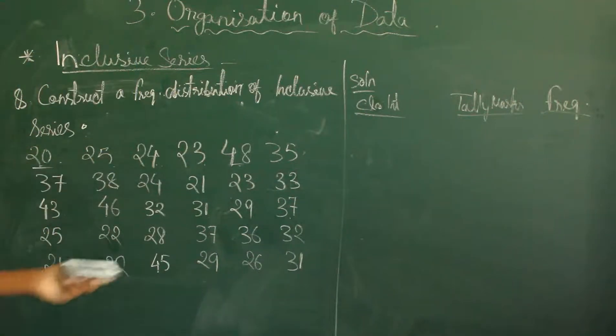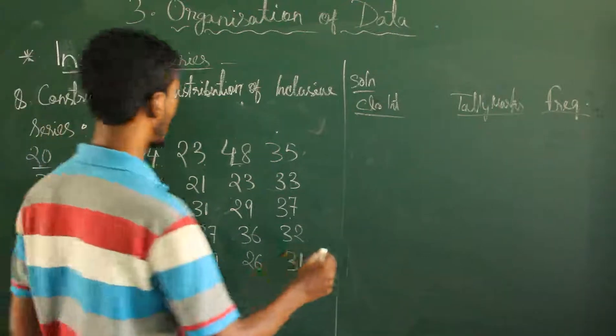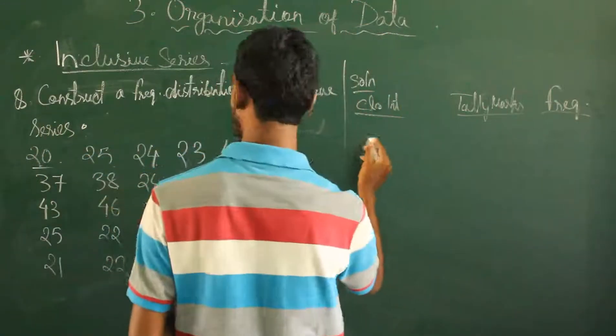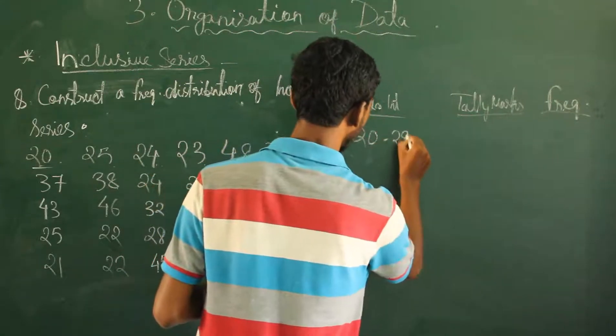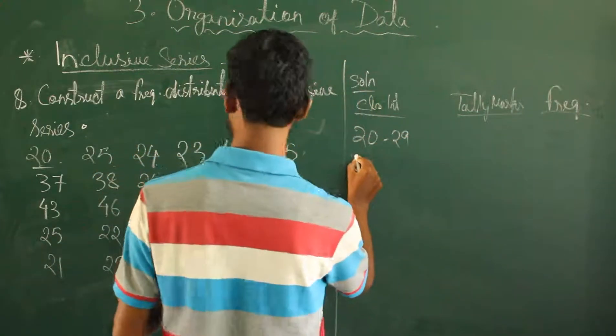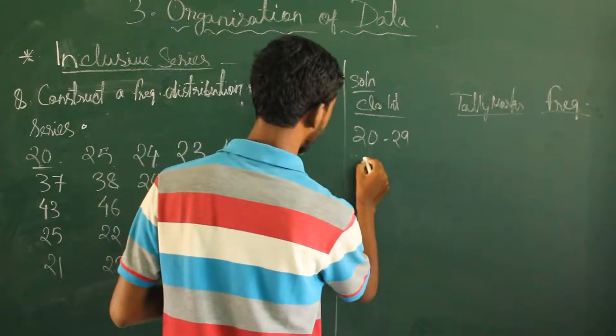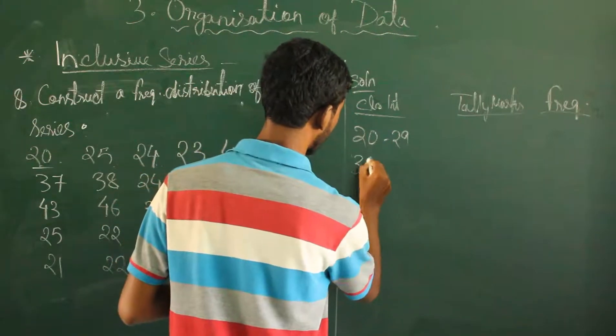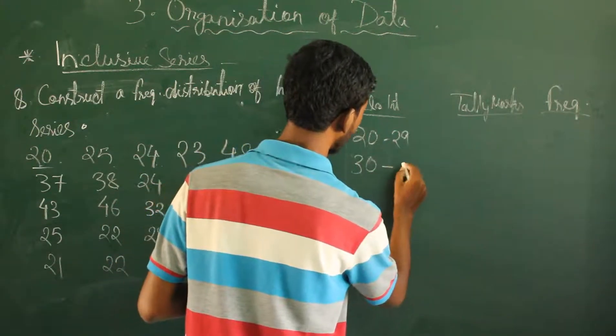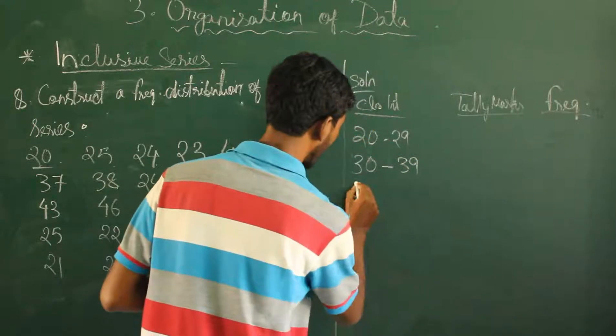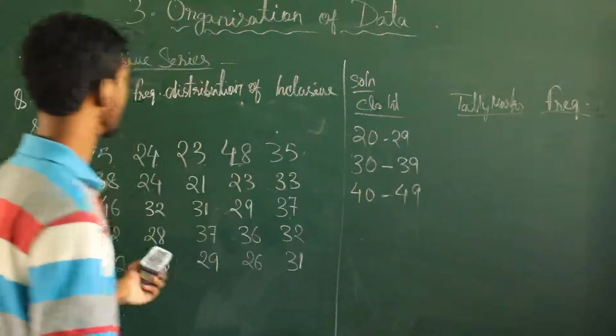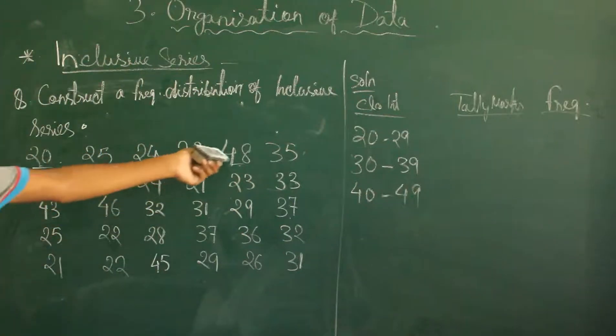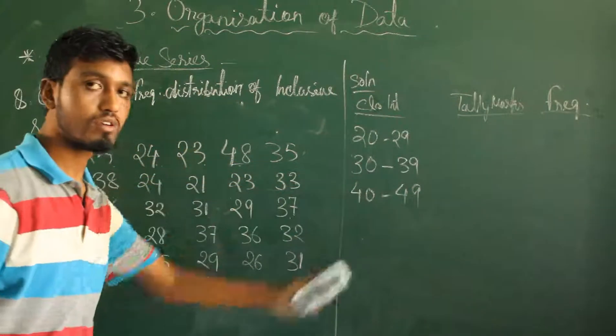So here lowest value is 20 and highest is 48. So here how many? First we have 22, 29, then 32, 39, 42, 49. So highest is 48. So here is what we need to do.